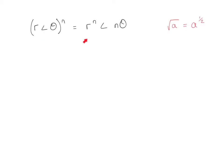We've seen how De Moivre's theorem can raise complex numbers in polar form to a power. But where it becomes particularly useful is in finding the roots of complex numbers. We can use the identity that the square root of a is a to the power of one half, or more generally, the b-th root of a equals a to the power 1 over b. This allows us to raise polar form numbers to fractional values to find square roots or cube roots of complex numbers.